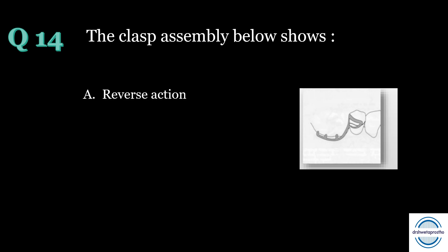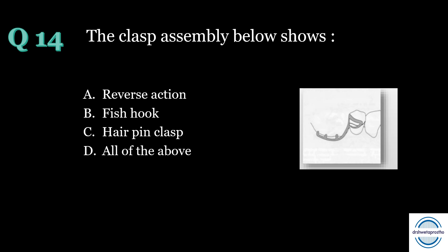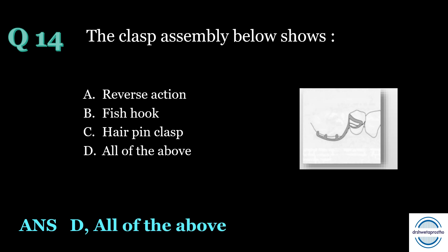Question number fourteen: the clasp assembly below shows — A. Reverse action, B. Fish hook, C. Hairpin clasp, D. All of the above. The answer is D, all of the above. It is a reverse action clasp because the retentive loop loops back to engage the undercut apical to the point of origin. Because of its design, it is also called a fish hook or hairpin clasp.